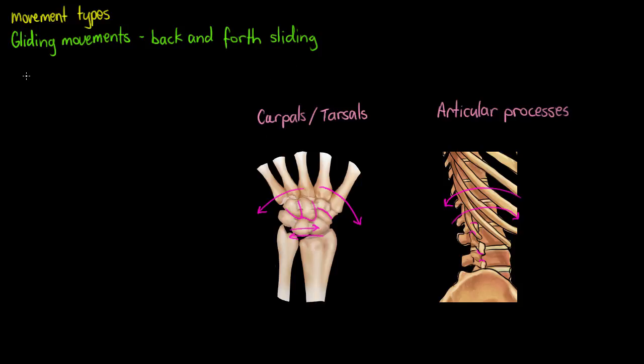The types of joints we'll see this in most often are our plane joints. If we remember back to our tutorial on different types of synovial joints, we had plane joints and ball and socket joints and hinge joints and a few other types of synovial joints as well.